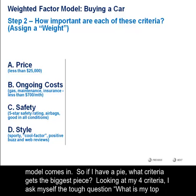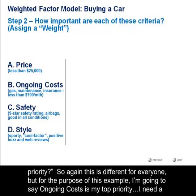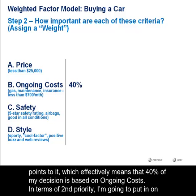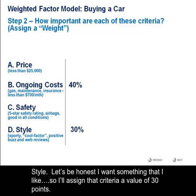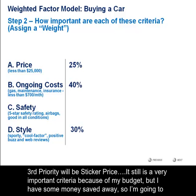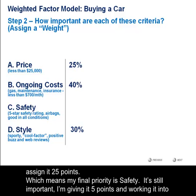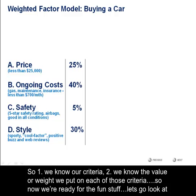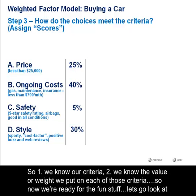So if I have a pie, what criteria gets the biggest piece? Looking at my four criteria, I ask myself the tough question: what is my top priority? For the purpose of this example, I'm going to say ongoing cost is my top priority — I need a car that my part-time job will allow me to affordably carry each month. And how important is this criteria to me? I'm going to assign 40 points to it, which effectively means that 40% of my decision is based on ongoing costs. In terms of second priority, I'm going to put it on style — if I'm spending this much money, I want something that I like — so I'm going to assign that criteria a value of 30 points. Third priority will be sticker price — it's still very important because of my budget, but I got some money saved away, so I'm going to assign it 25 points. Which means my final priority is safety. It's still important, I'm giving it five points and working it into my decision, but what I've determined is that the crash test rating won't influence my decision as much as the price or the style will.